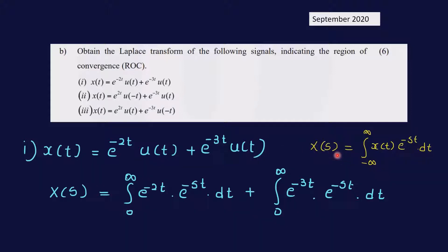The Laplace transform X(s) is defined as the integral from minus infinity to infinity of x(t) e^(-st) dt. For this right-sided signal, X(s) reduces to the integral from 0 to infinity.